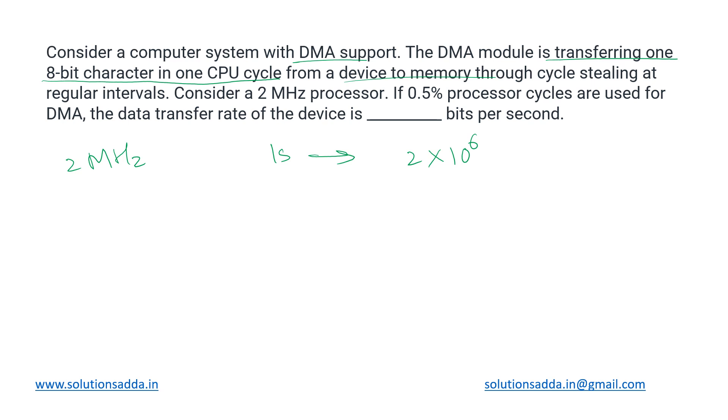Out of these, 0.5% cycles are being stolen and used for the DMA purpose. So what is the number of cycles being used for DMA? 0.5% which means 0.5 by 100 times 2 times 10 to the power 6.